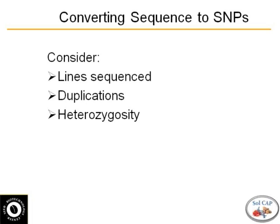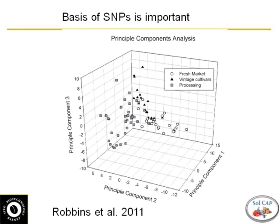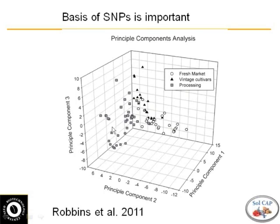Heterozygosity can also mix things up in your samples when you're assembling genomes. This example is from Dave's work by Matthew Robbins, where he clustered using DNA markers — I think these are microsatellites — with principal component analysis. He was able to cluster basically the fresh market types (the open circles), the vintage or more heirloom type varieties, and the processing types. Clearly they fall out into different groups with some overlap. You need to know where your germplasm falls relative to these groups and which ones are being sequenced.